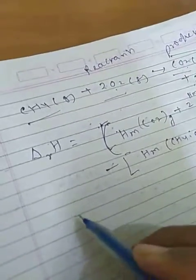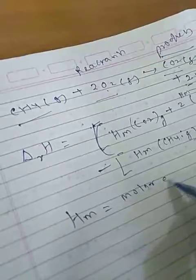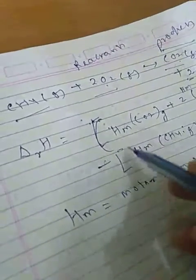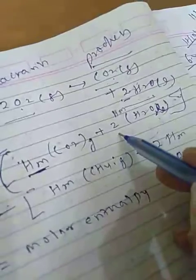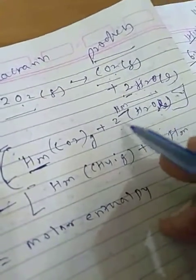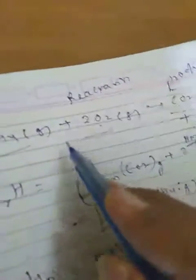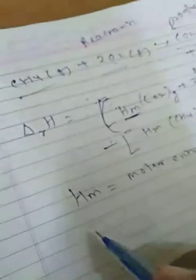Here Hm is molar enthalpy — molar enthalpy for one mole. So we write: delta RH equals Hm(CO2) plus 2 times Hm(H2O) minus Hm(CH4, gas) plus 2 times Hm(O2). This quantity is called molar enthalpy.